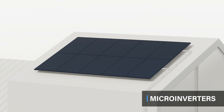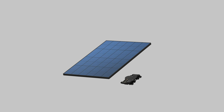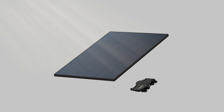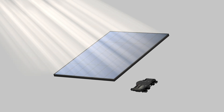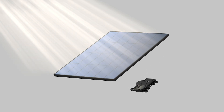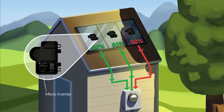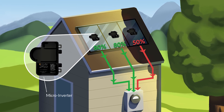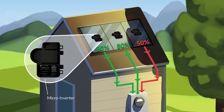String inverters are efficient for large installations and are easy to maintain long term. On the other hand, microinverters are a newer option. Each solar panel has its own microinverter attached directly to the back, so every panel operates independently. Even if one or two panels are in the shade, the others will keep running efficiently.